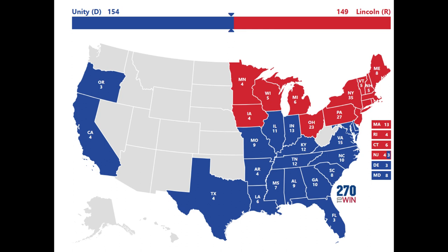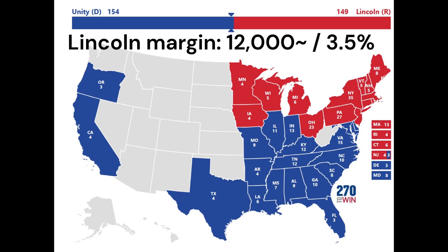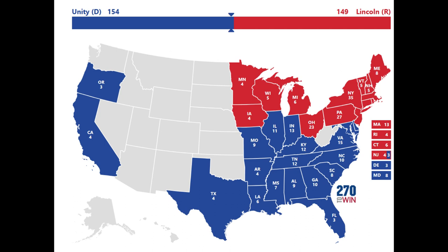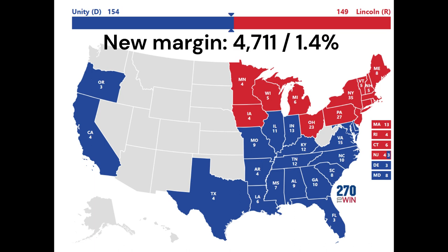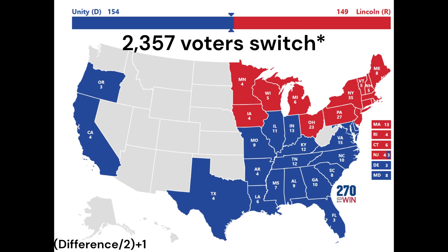The second scenario is slightly more complicated, as it requires the unity candidate to win two states — Illinois and Indiana — combined at 24 electoral votes. Starting with Illinois, with its 11 electoral votes, Lincoln won the state with 172,171 votes, with the closest competitor being Douglas with 160,215 votes, meaning a deficit of 11,956, or a 3.5% margin. When we add in the other candidates, it equals 167,460 votes, with a deficit of only 4,711, or a 1.4% margin. In this state, 2,357 voters switching away from Lincoln deliver the state to the unity candidate.